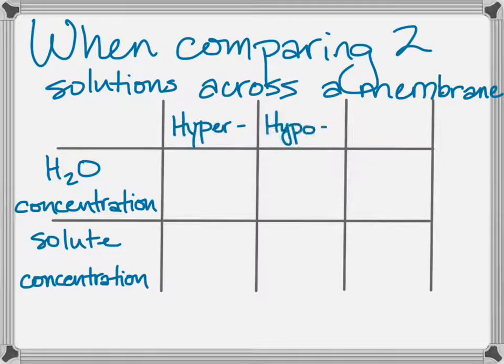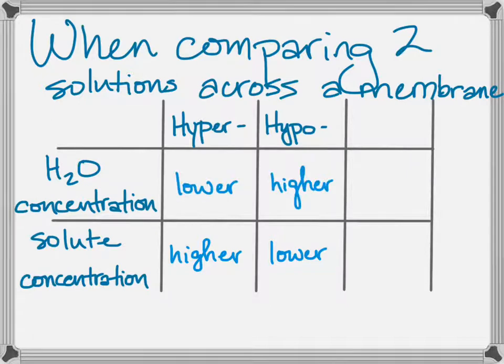The hypertonic and hypotonic solutions, comparing them to each other, the hypertonic, like excessive, it has more solutes, and the hypotonic solution has less. That means that the hypotonic solution has a higher water concentration, and the hypertonic solution has a lower water concentration.